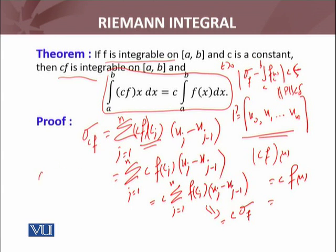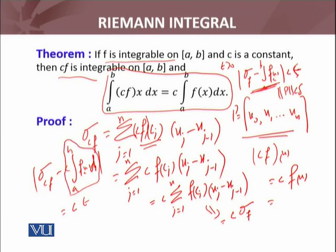Now consider the integral of cf minus c times the integral from a to b of f(x)dx in absolute value. That will equal c times epsilon, using what I wrote here. So the cf function will be integrable, and in fact its integral equals this one. This is what I wanted to prove.